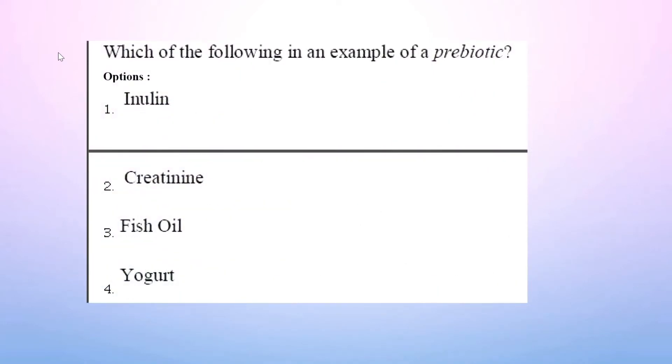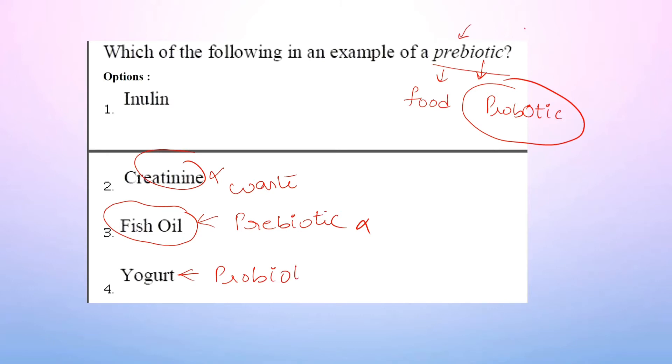Which of the following is an example of a prebiotic? Options: Inulin, creatinine, fish oil, yogurt. Prebiotic means food for microorganisms. Probiotic itself contains microorganisms, not food. Creatinine gets eliminated because it's a waste product. Fish oil is not a prebiotic. Yogurt is eliminated. Yogurt itself is a probiotic, it contains microorganisms.